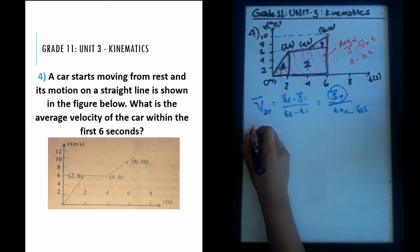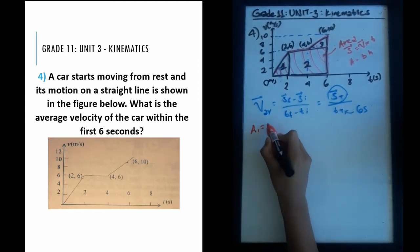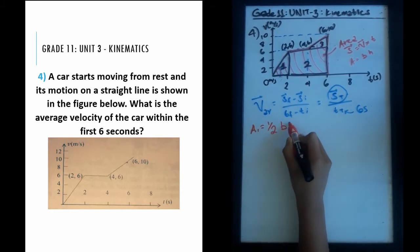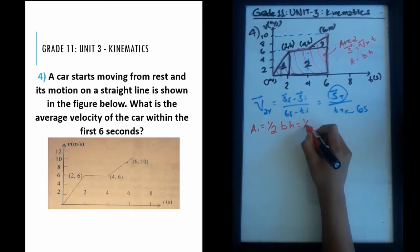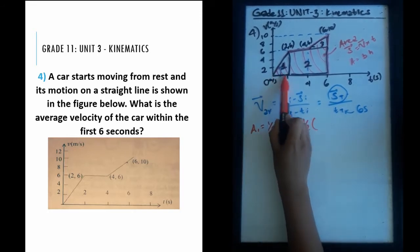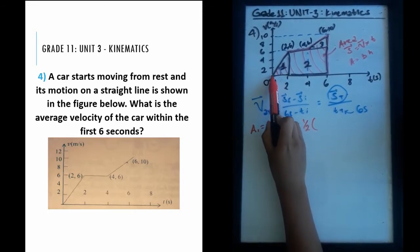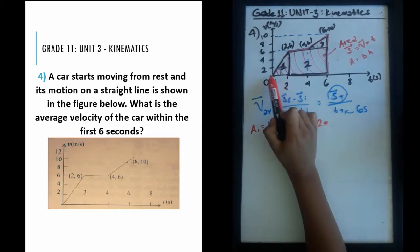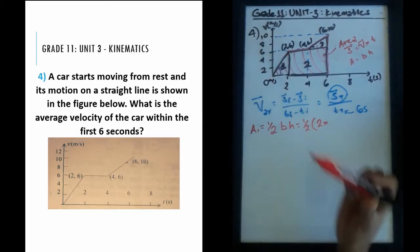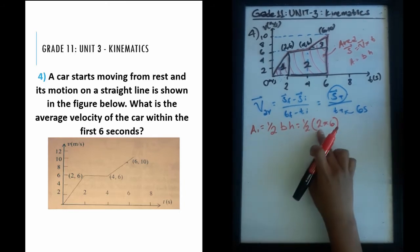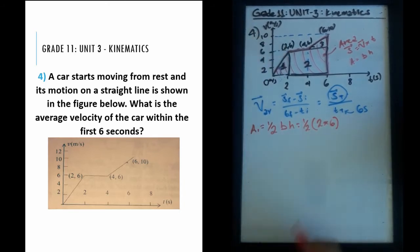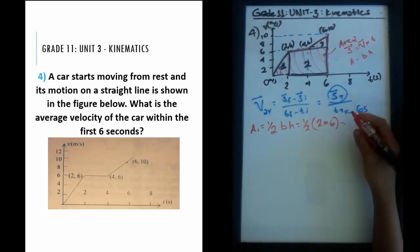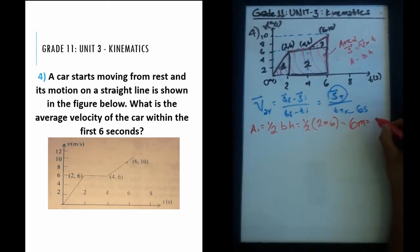Let's find the area of shape one — it's a triangle, so we use half base times height. The base is the time from zero to two seconds, which is two seconds. The height is six meters per second. So that's one half times two times six: twelve divided by two equals six meters. That's our first displacement.